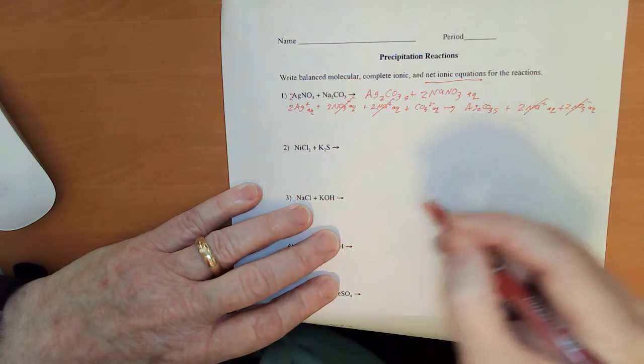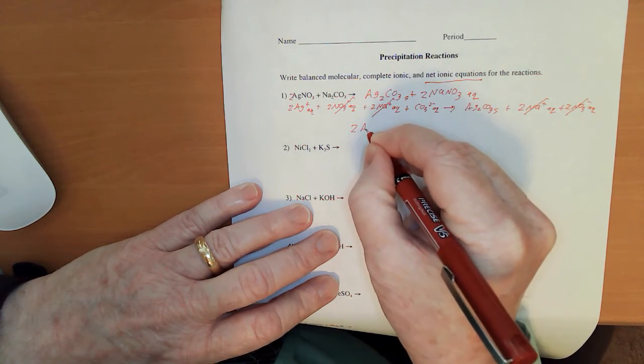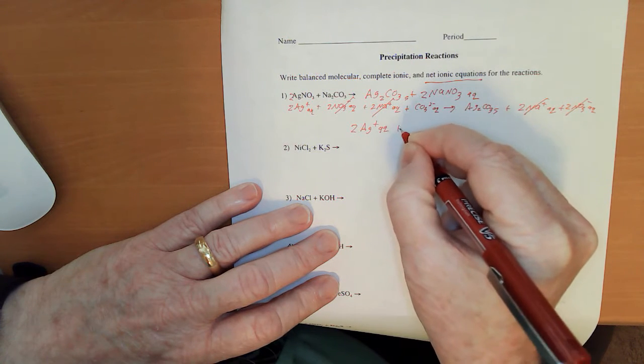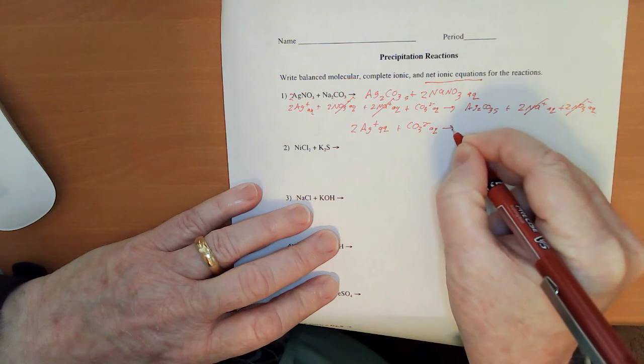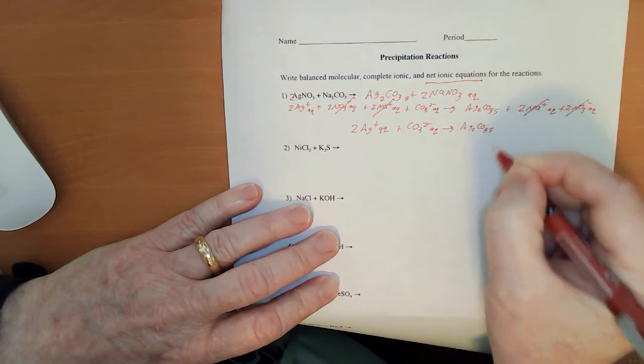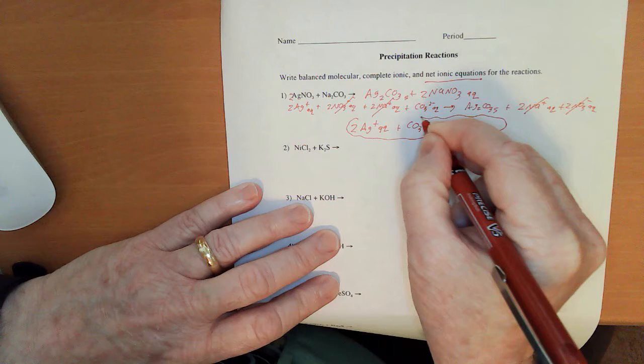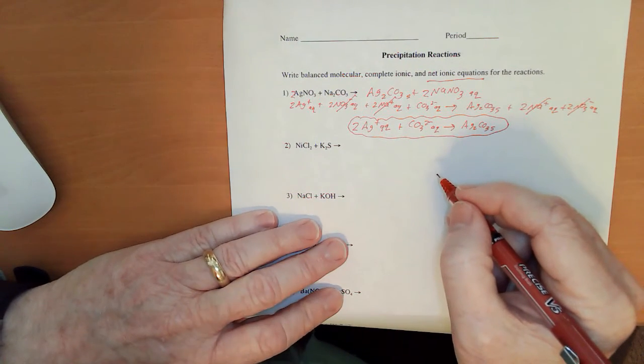That's going to leave us with 2 Ag plus aqueous, and a CO3 2 minus aqueous, to give us an Ag2CO3 solid, and that right there for number 1.